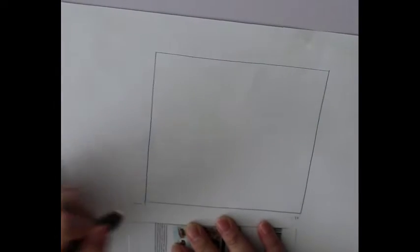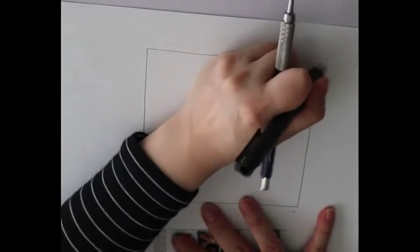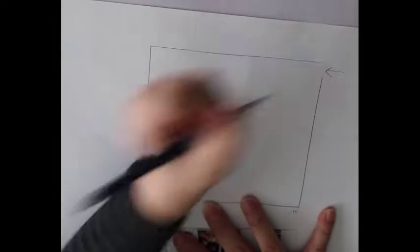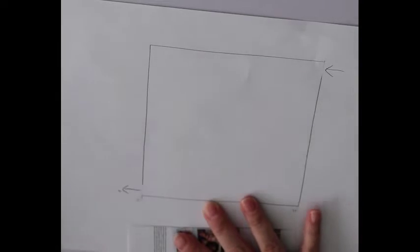And then after you drew the square, you are going to make an entry and an exit for the maze. So here is where you want people to enter and here is where you want them to exit.